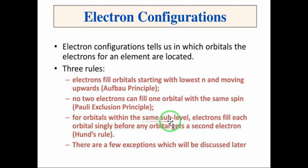Next rule - Hund's rule. Two orbitals within the same sub-level - electrons fill each orbital singly before any orbital gets a second electron. Before filling the orbital, you will fill singly, then you will add the second electron. You will add one electron, then another electron, then another electron, then you will pair them up.